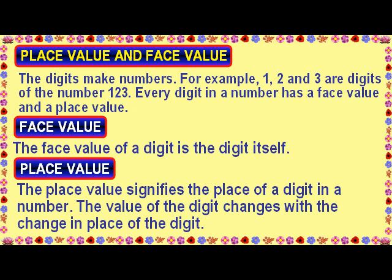Place Value and Face Value. The digits make numbers. For example, 1, 2, and 3 are digits of the number 123. Every digit in a number has a face value and a place value. The face value of a digit is the digit itself. The place value signifies the place of a digit in a number. The value of the digit changes with the change in place of the digit.